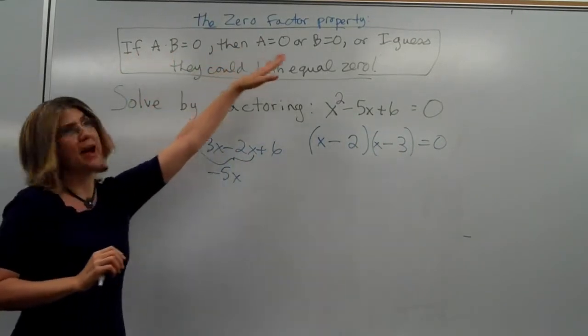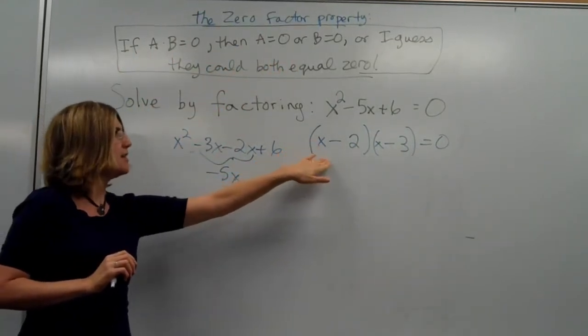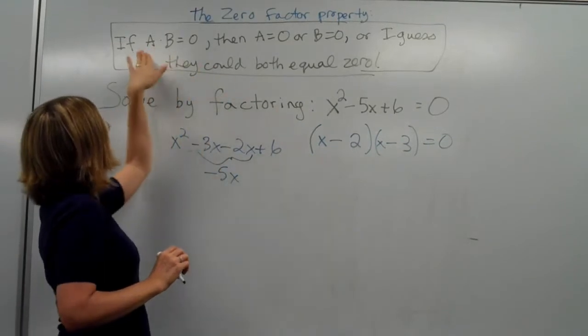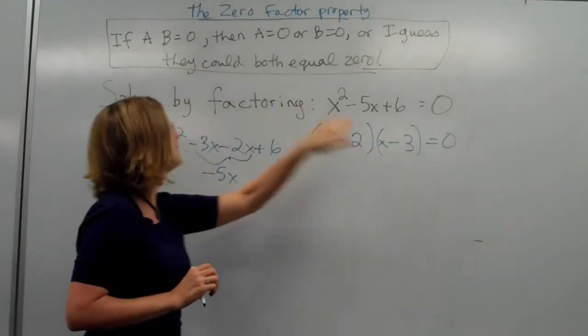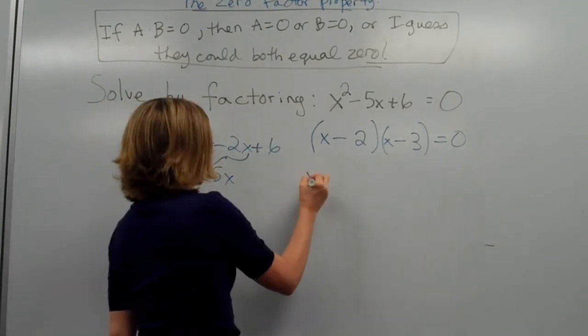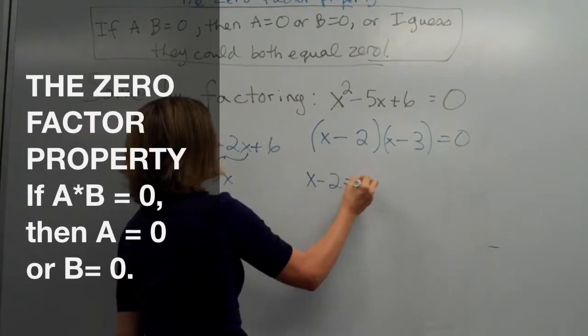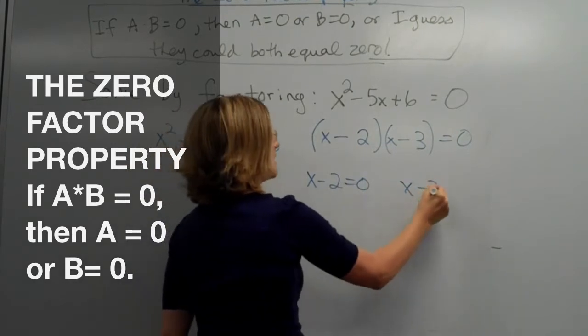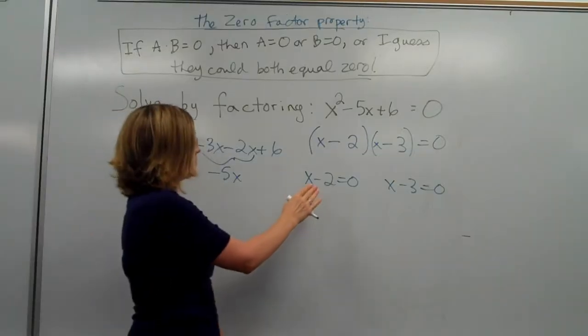So, now, let's use the zero factor property. If this whole thing, you can think of this as being like A, and this whole thing, you can think of this as being like B, multiply together to give zero, then either the first part, x minus two, must be zero, or the second part, x minus three, equals zero.